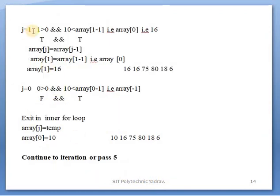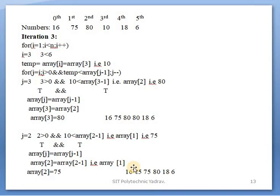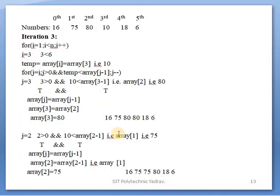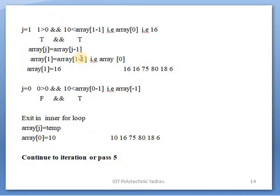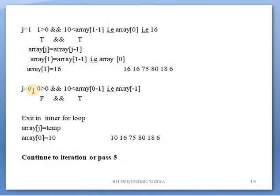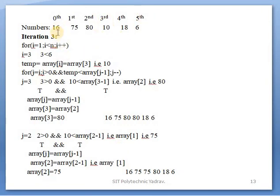j decrements to 0. 0 greater than 0 is false, so the inner loop exits. Temp value is 10, so 10 is assigned to array[0]. Now 10 is placed in its proper position. The iterations continue — this is iteration 3, 4, 5 — because n minus 1 means 5 passes are possible.